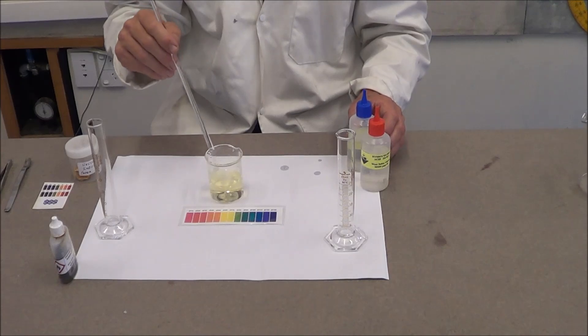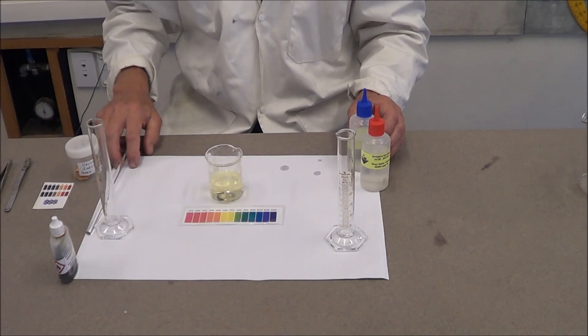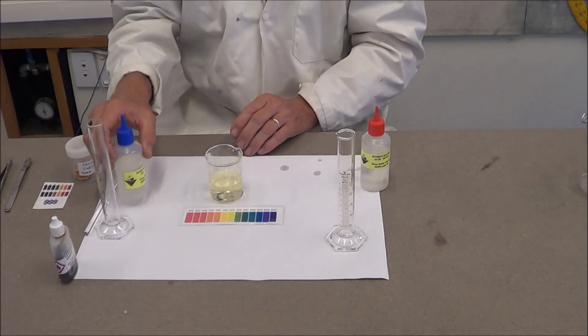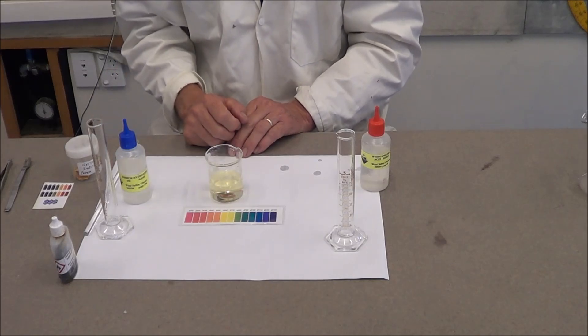And there we have our universal indicator color indicating the pH of 7. The acid should all be neutralized and there should be little or no leftover alkali in that reaction mixture.